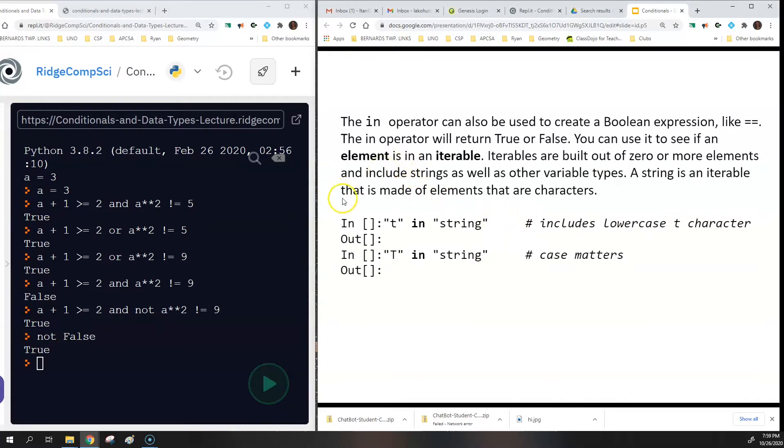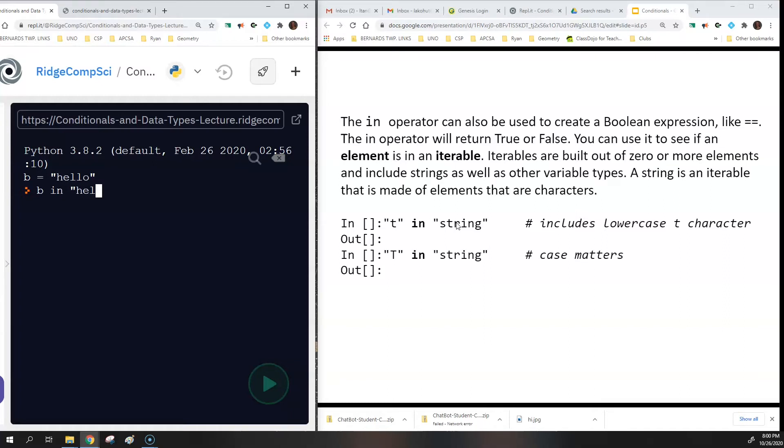So there's another operator called the IN operator. The IN operator is a boolean expression, just like the double equals would be, except that the IN checks if a certain value is in some other thing. So it's inside of an iterable. An iterable is something that you can run through, and we'll talk a lot more about iterables later on. But for now, we're just going to use it to check if a certain string is within another string. So if I did like, let's set B equal to hello. And then I did B in hello world. And that would return true because hello is within hello world.